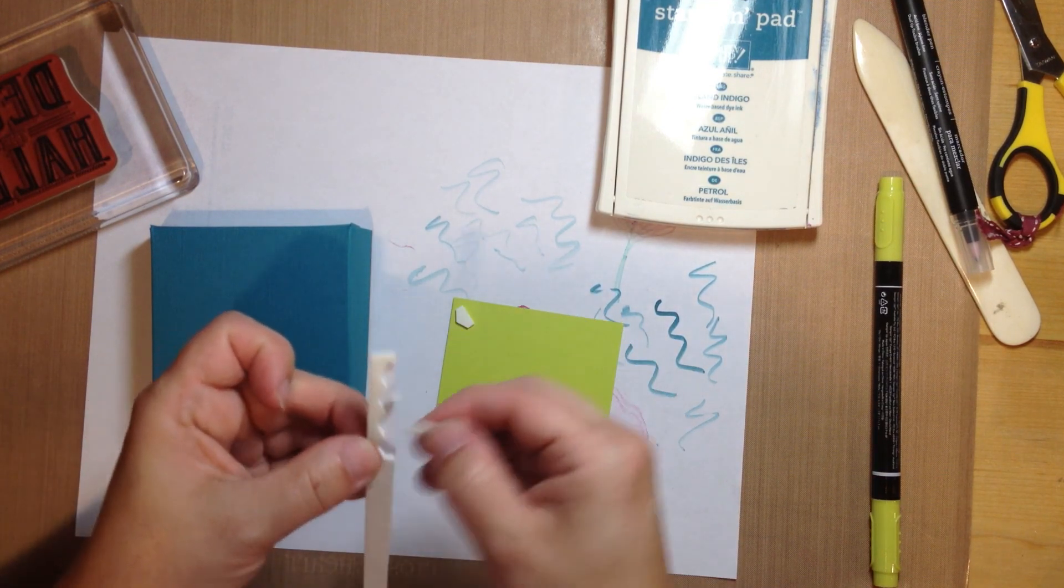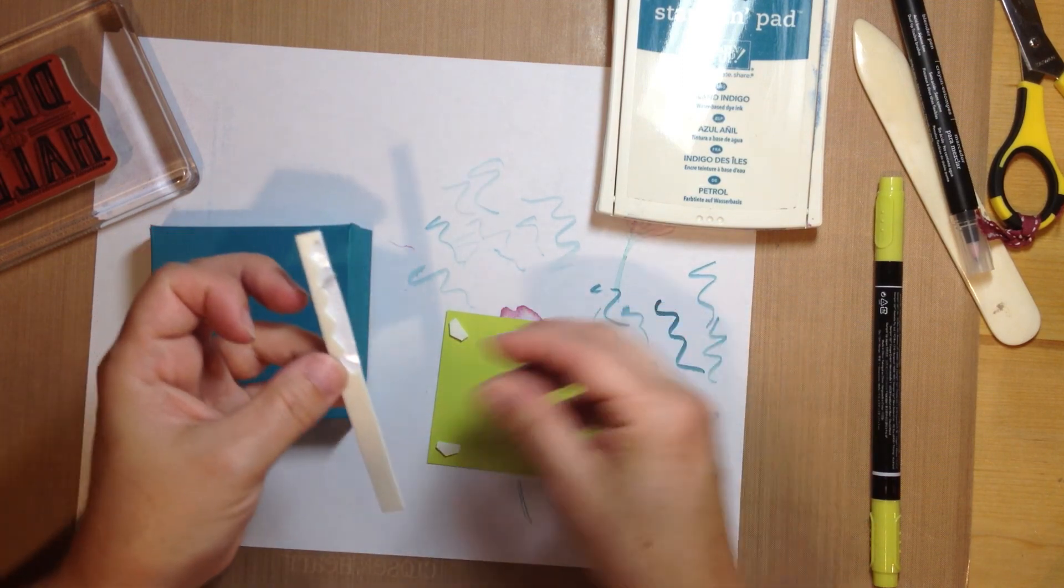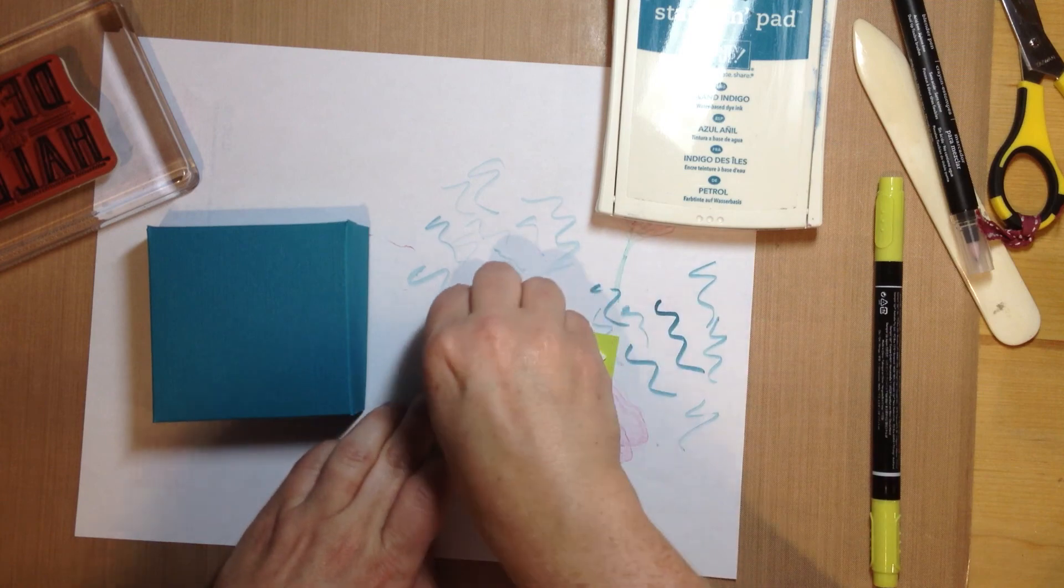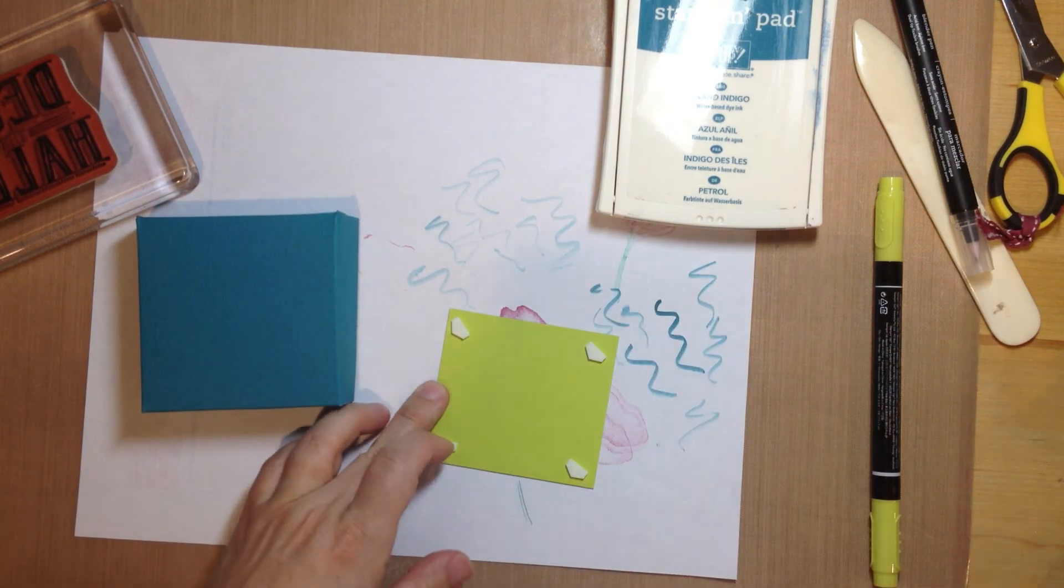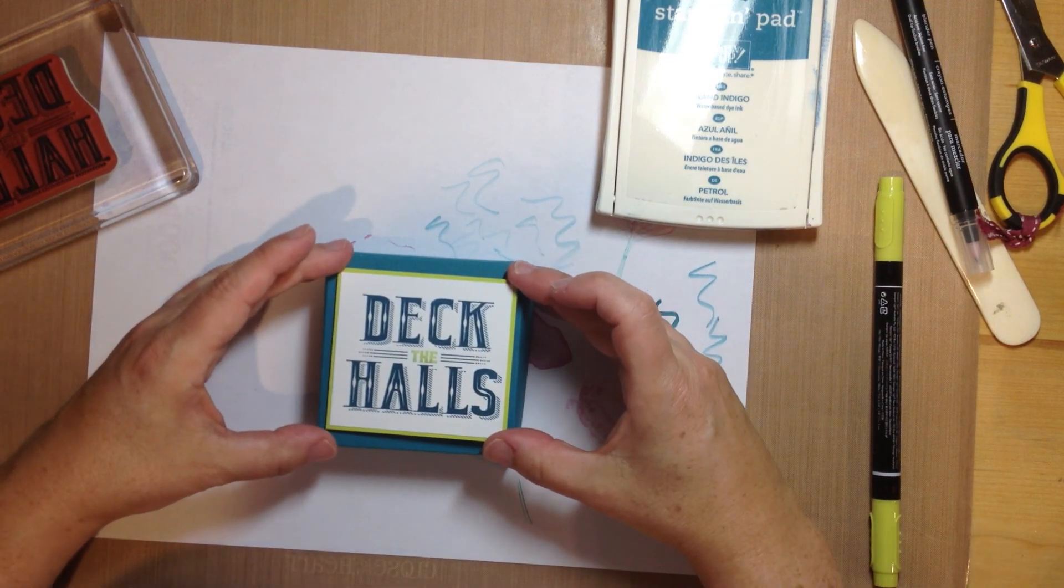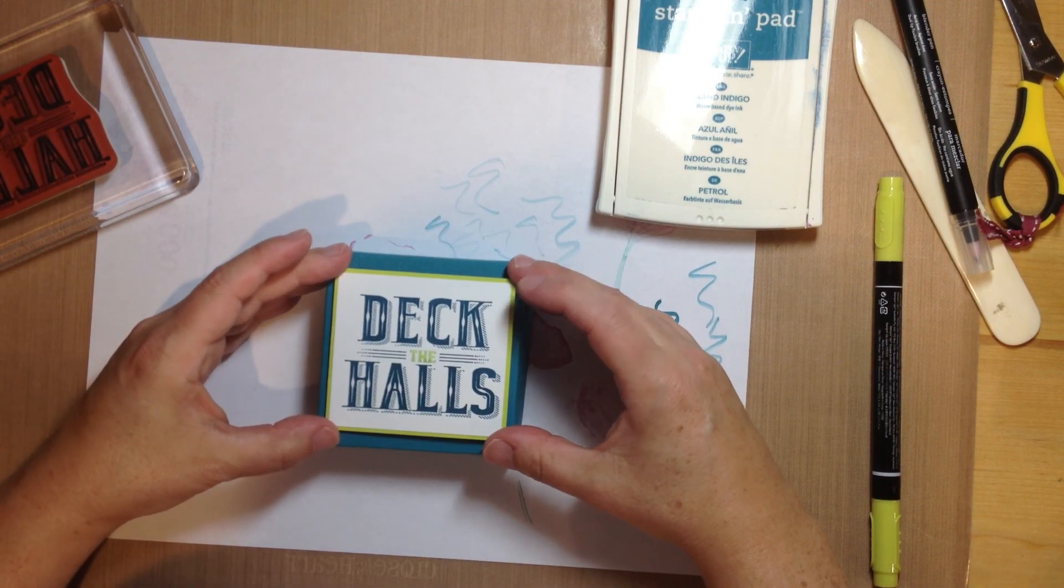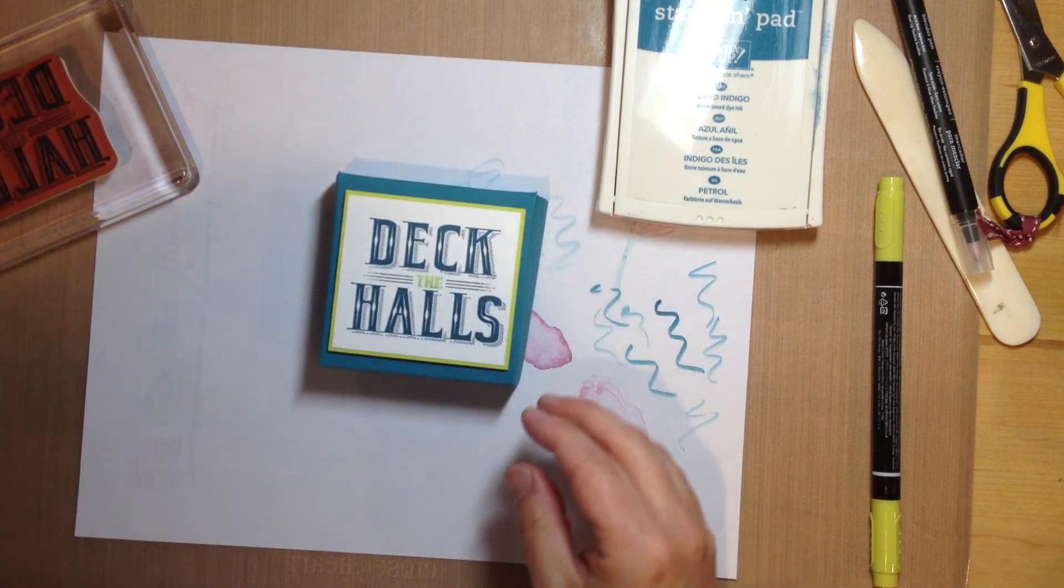Here's another little trick. My full-size dimensionals I always cut in half. The dimensional sticks so well that you don't need a whole dimensional. Half of a dimensional will work just fine. And like I've said before, if you've watched some of my videos, I'm kind of a frugal stamper. So I like to stretch my supplies if I can.